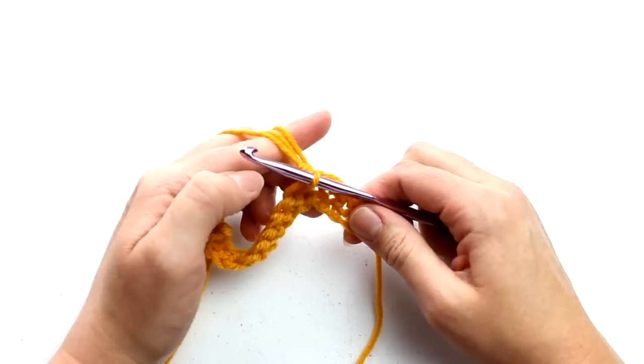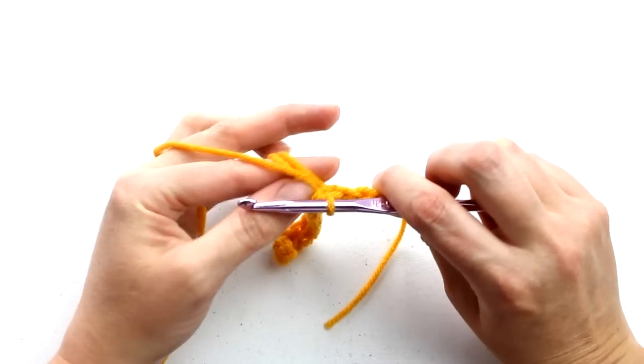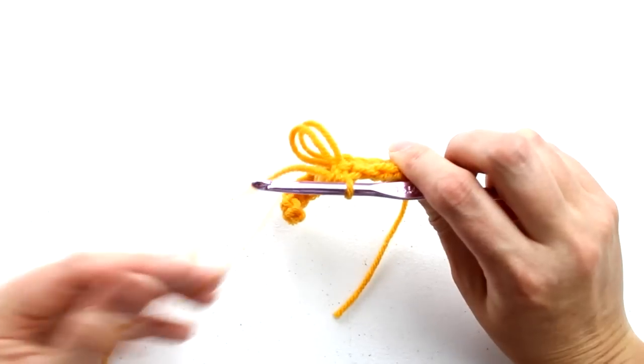Now as I turn my hand over, you can still see the two loops on my finger. Now take your finger out of the loops, and move on to the next stitch.